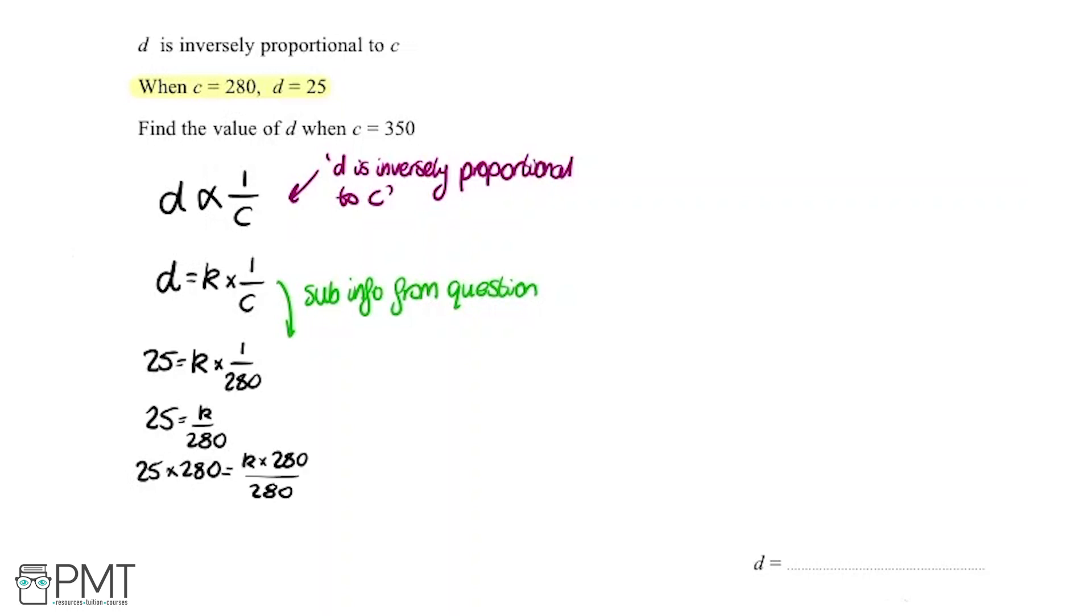We can see these on the top and bottom here, they're going to cancel. So what we're left with is K equals 25 times 280, which is 7,000. So that's great, we've worked out what our constant of proportionality is.